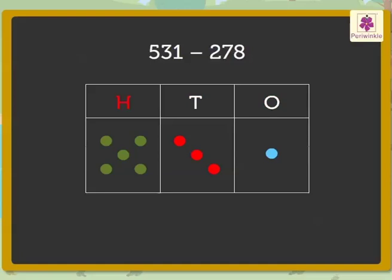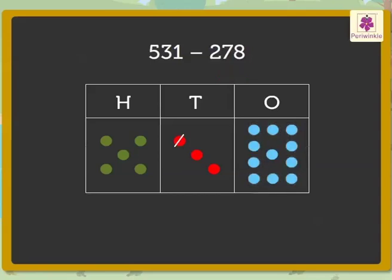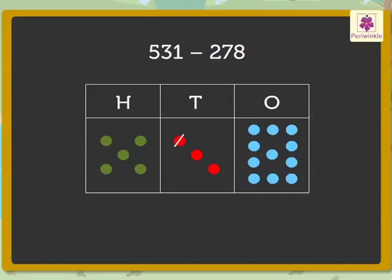But look, there is only one blue dot in the ones column and we need to cancel eight blue dots. We cannot subtract eight from one, so we regroup one red dot to ten blue dots. As we already know, one red dot is equal to ten blue dots.